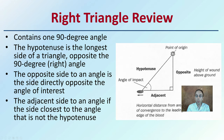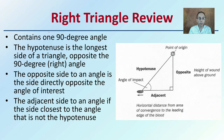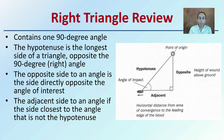First, a quick review of a right triangle. A right triangle contains a 90-degree angle. The hypotenuse is the longest side of the triangle, opposite the 90-degree or right angle. The opposite side to an angle is the side directly opposite the angle of interest.